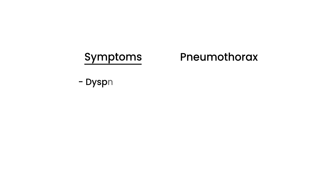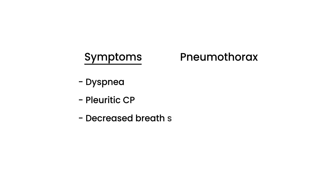Now let's talk about the symptoms of pneumothorax. Somebody with pneumothorax will have difficulty breathing — dyspnea. Another thing is pleuritic chest pain, which means when a person breathes they're going to have pain. When you listen to their lungs, there will be decreased breath sounds on the affected side. And on percussion, you'll see hyperresonance. Those are some of the symptoms, though they're pretty vague.